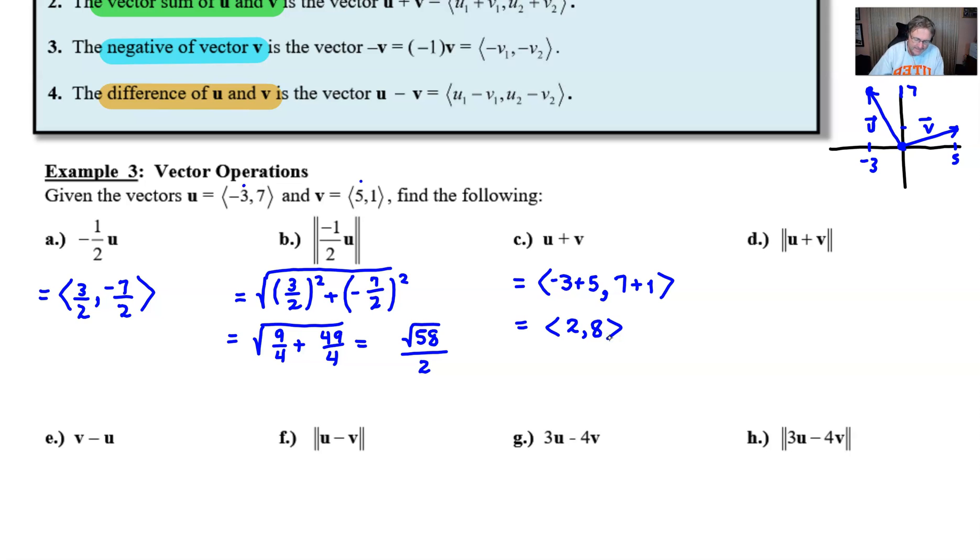And then if we go ahead and combine, we would get 2, 8 as the resultant vector. So basically that's saying that if these two vectors were added together, the result would be something like this. It would be a vector that's right about there. That would be the resultant vector, that purple one.